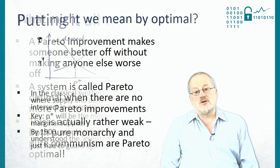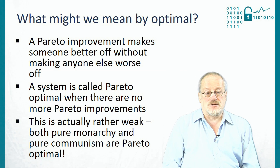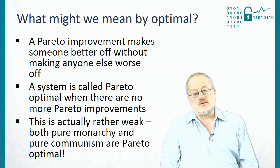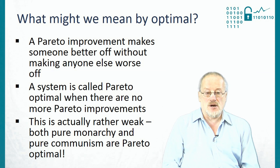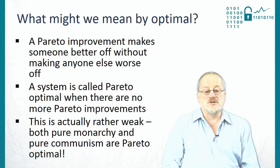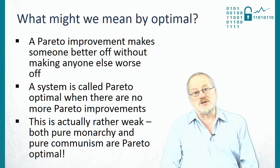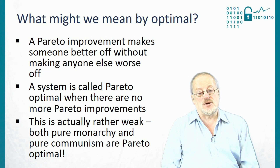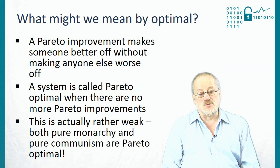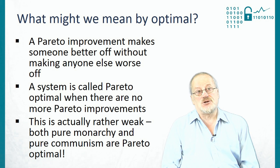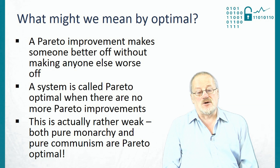Before we can think about monopoly, there's one interesting minor point: what do we mean by optimal or efficiency? The key idea goes back to the Italian economist Vilfredo Pareto, about 100 years ago. A Pareto improvement is any improvement which makes someone better off without making anybody else worse off. A system is called Pareto optimal when there are no more Pareto improvements possible. This is actually a rather weak condition — both pure monarchy and pure communism are Pareto optimal.